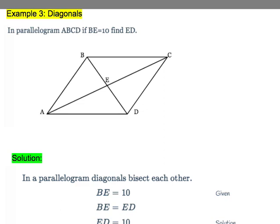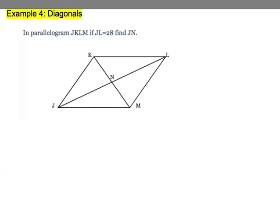Let's do one more together. This is another diagonal problem. And we have parallelogram JKLM where JL, the whole thing, is 28, and they want you to find JN. Now I know that JN and NL are congruent.